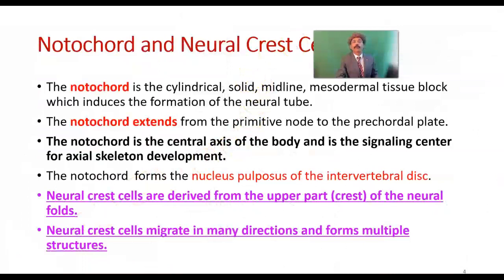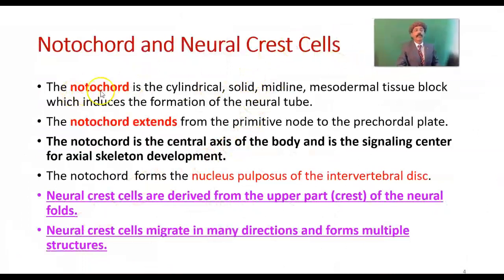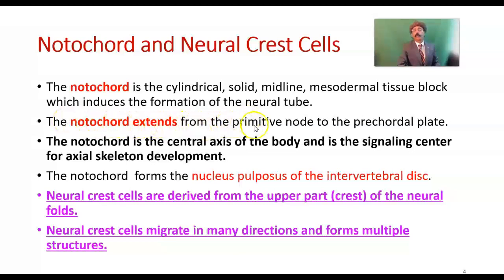Notochord — what is the notochord? It is a cylindrical, solid, midline mesodermal tissue block which induces the formation of the neural tube — from surface ectoderm to neural ectoderm, to neural groove, then neural fold, and neural crest cells. All are induced by the notochord. Notochord extends from the primitive node to the prechordal plate. It extends underneath the structures anteriorly.